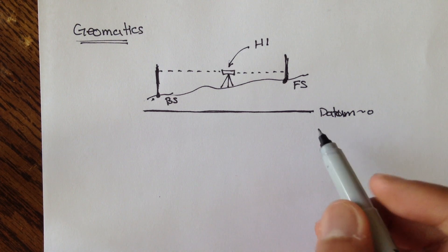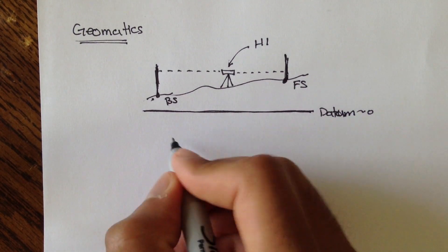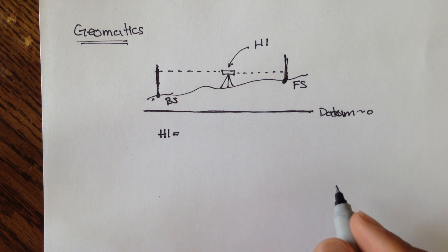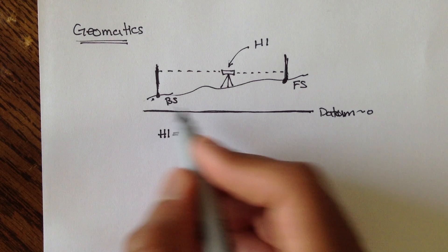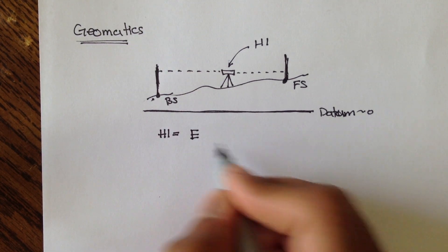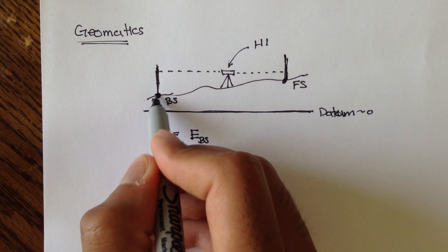The datum was zero, so if you wanted to figure out what the height of the instrument was, if you wanted to figure out what HI was, you would actually take the elevation, I'll call it big E, elevation of the backsight. And the elevation of the backsight was this point.